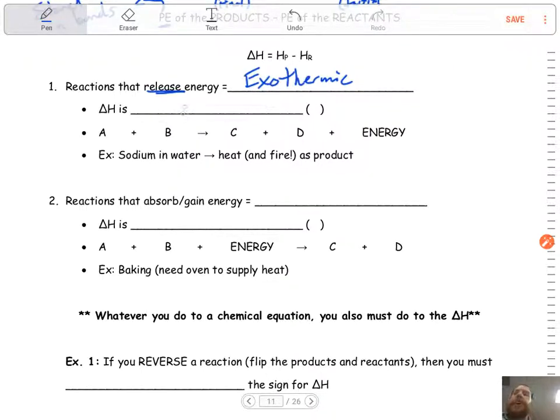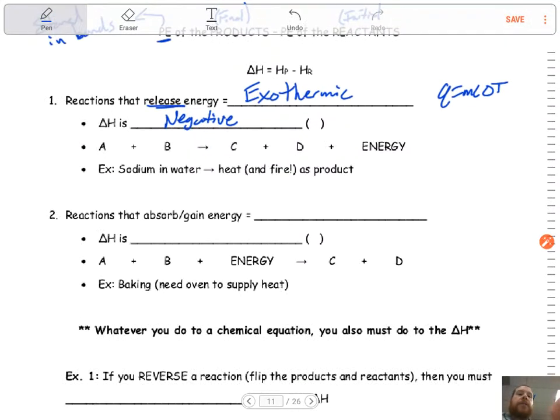If you have an exothermic reaction, your delta H value will be negative. And we've kind of seen this before when we did our Q values, right? Like Q equals M, C delta T. If it's a negative Q, that means it was released. Same kind of general idea here.